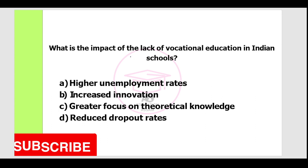Next question. What is the impact of the lack of vocational education in Indian schools? Option A: higher unemployment rates. Option B: increased innovation. Option C: greater focus on theoretical knowledge. Option D: reduced dropout rates. The correct answer is Option A, higher unemployment rates.